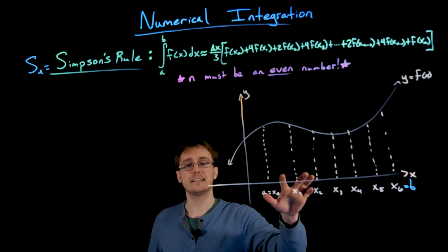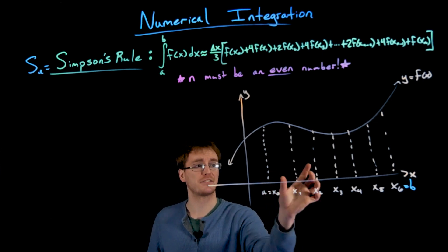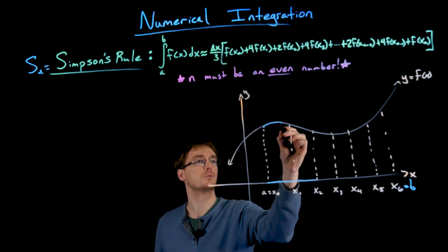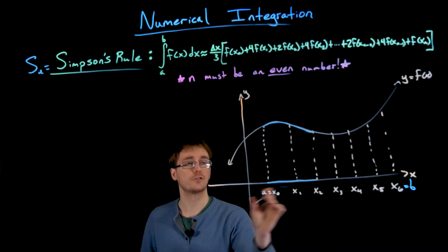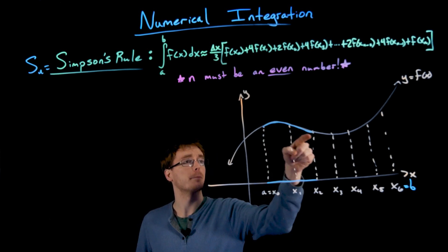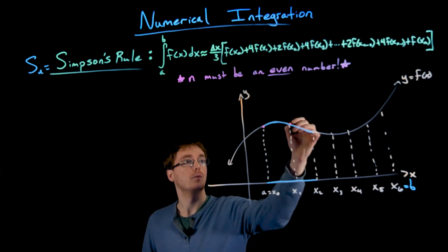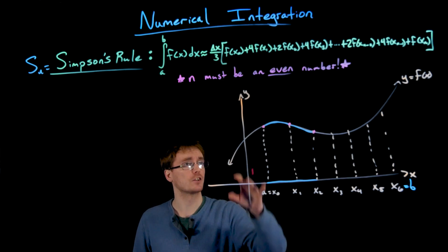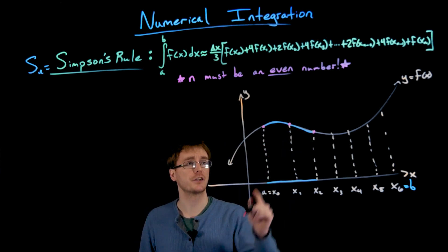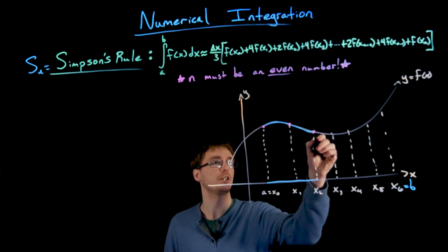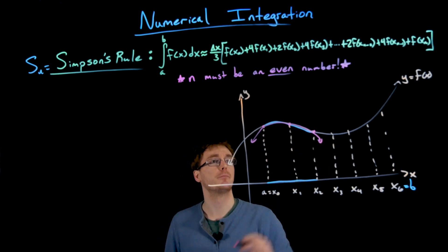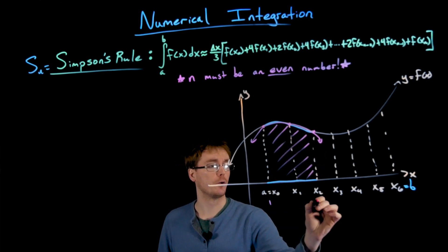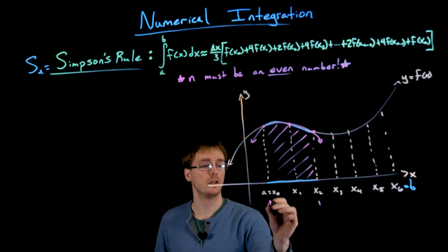Behind the scenes, we're taking adjacent subintervals — that's why we need an even number of them, so we can always stick two of them together. We stick the first two subintervals together, then think about our curve over that region. We approximate that curve using a parabola. We know the parabola should go through those three points, and one of the special properties of quadratic functions is that as long as our points aren't all on a line, we can find a parabola that goes exactly through those three points. We then find the area underneath that approximating parabola over the interval from x₀ to x₂.